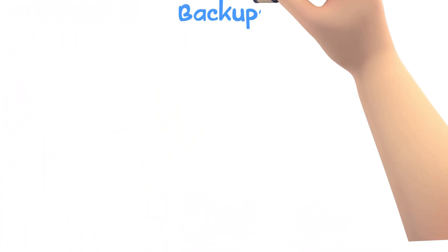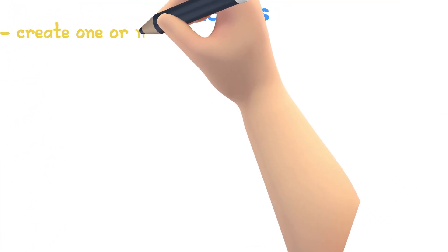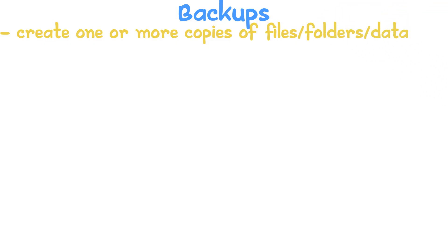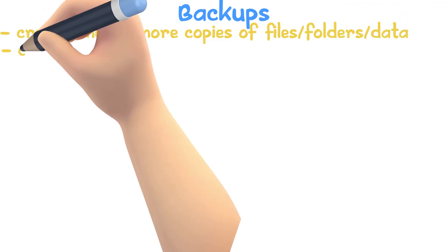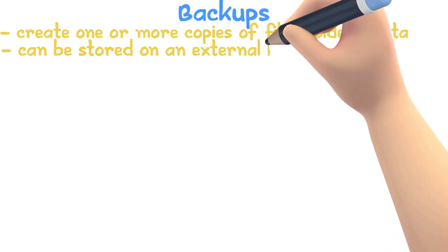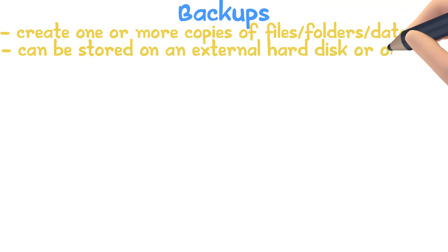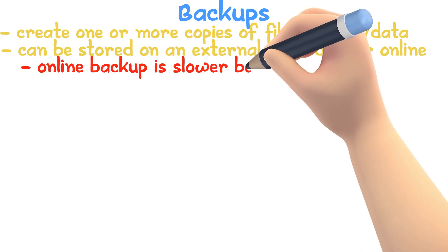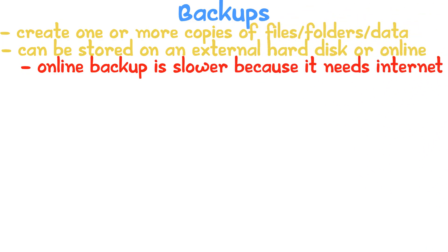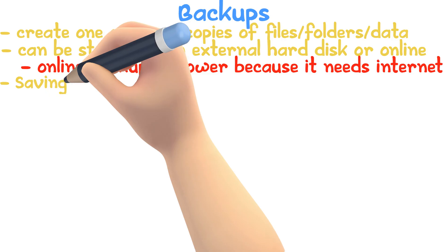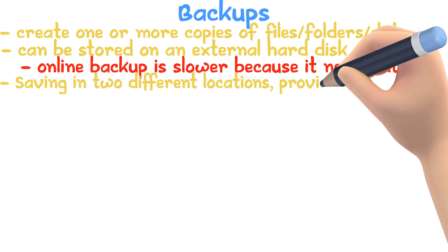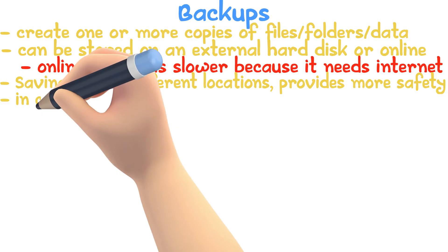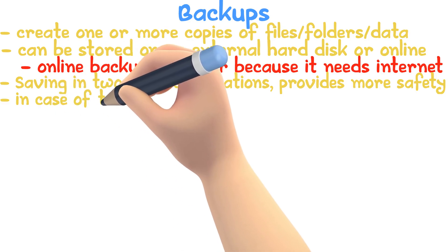A backup will create one or more copies of a file, folder, or any data. Backups can be stored on an external hard disk or in online storage. Backing up online is slower because it requires an internet connection; however, saving in two different locations provides more security.